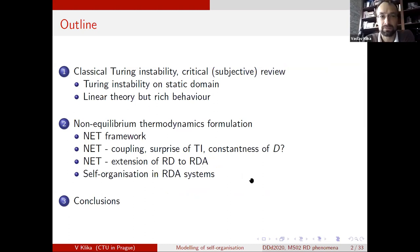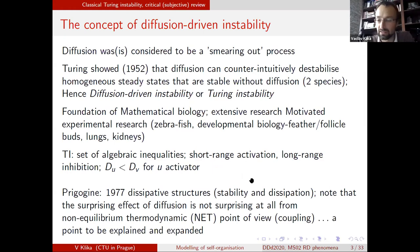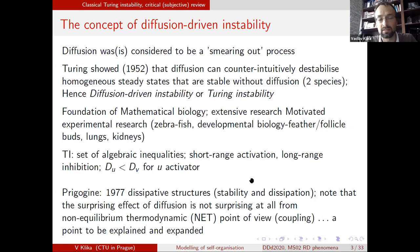So the concept of diffusion-driven instability goes back to Turing. Intuitively, diffusion is considered as a smearing-out process, but Turing showed something counterintuitive: with certain types of reactions added to diffusion, you can actually observe that certain types of structures might appear. Hence the notion of diffusion-driven instability, or Turing instability.